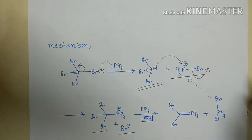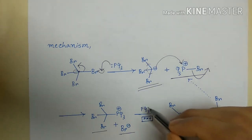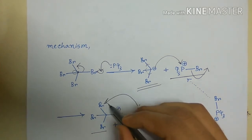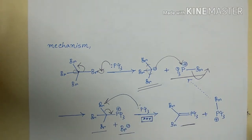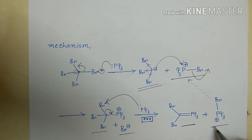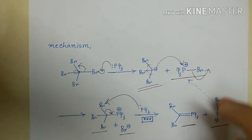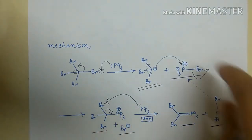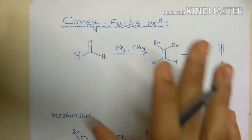In the reaction medium there are many triphenylphosphine molecules, so another phosphine molecule can attack another bromine atom of this species. This generates the same phosphorus cation again, which can be attacked to continue the process. This is essentially a cyclic process, and in this first step we obtain the dibromo alkene (1,1-dibromoalkene) intermediate.